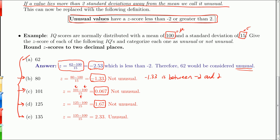When you look at 135, you get a z-score of 2.33, meaning that IQ is 2.33 standard deviations above the mean. That's bigger than 2, so that makes it unusual.